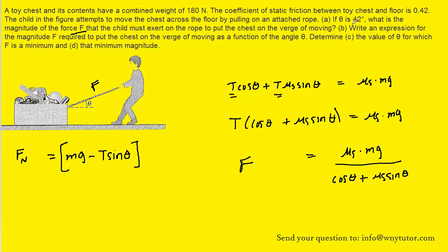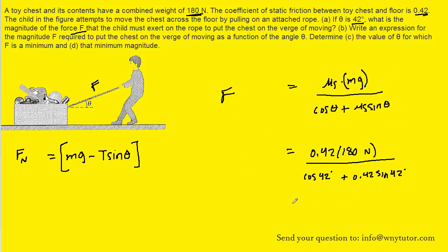Remember that theta was 42 degrees. mg was the weight of the toy chest, 180 newtons — so notice we're not plugging in 180 for m; the entire quantity mg is 180 newtons. The mu_s value was given as 0.42. After plugging in and computing, we end up with roughly 74 newtons. So this would be the correct answer to part a.